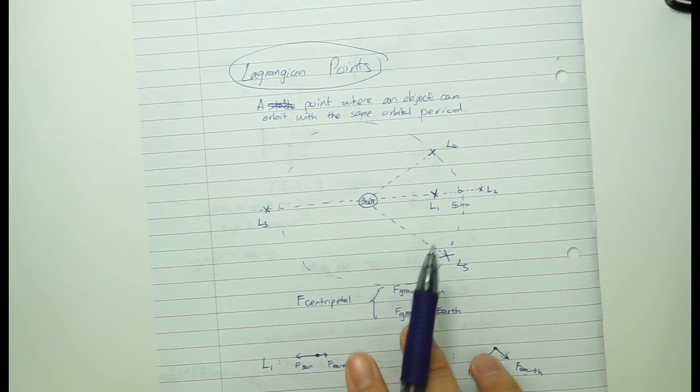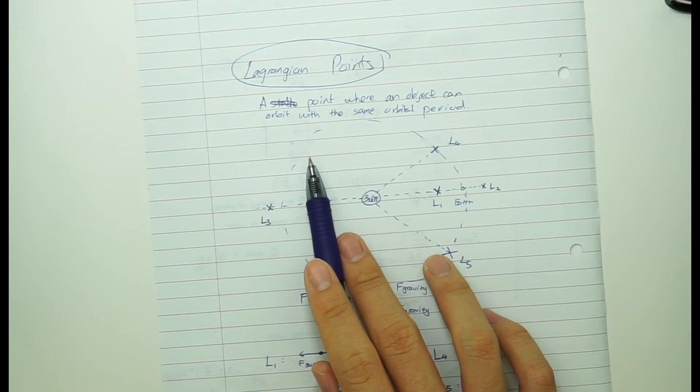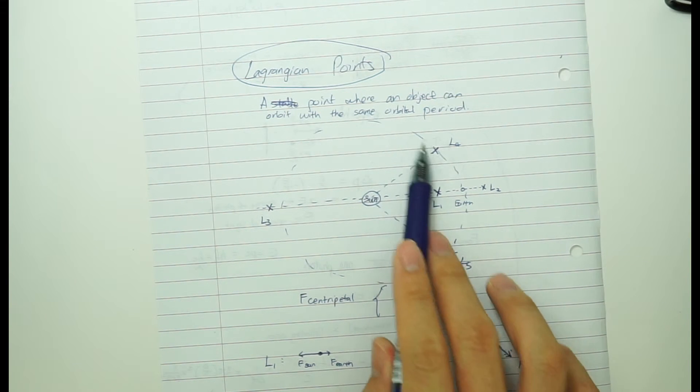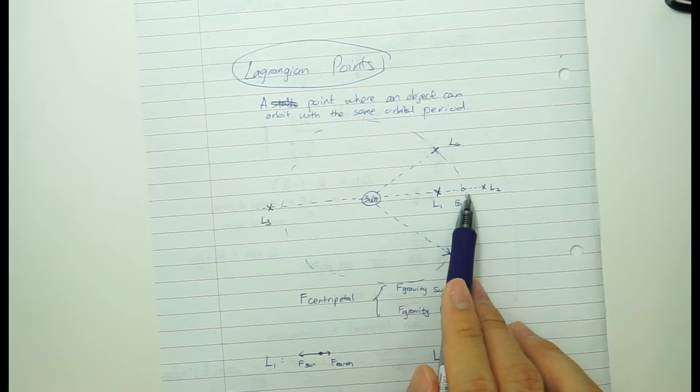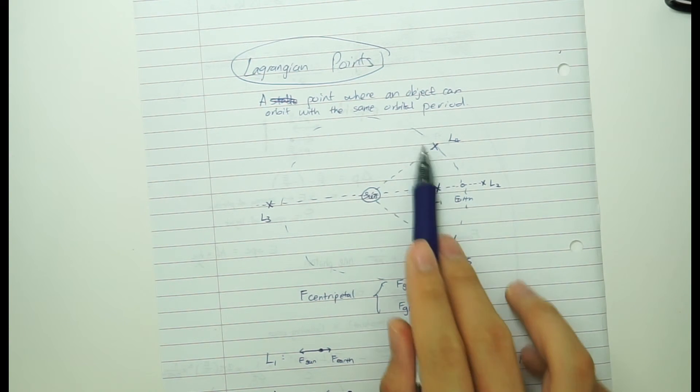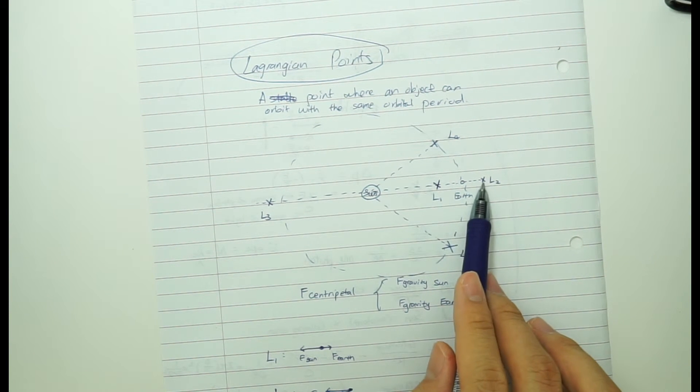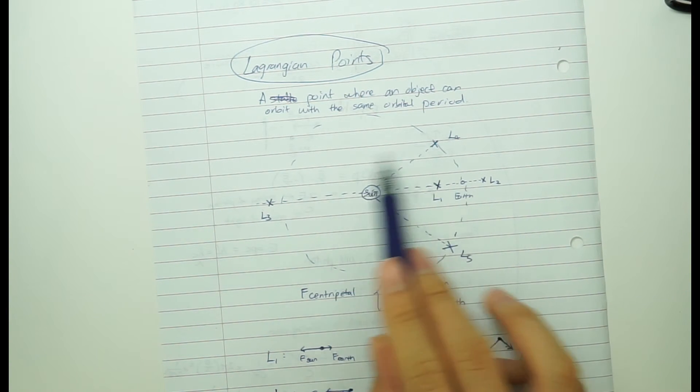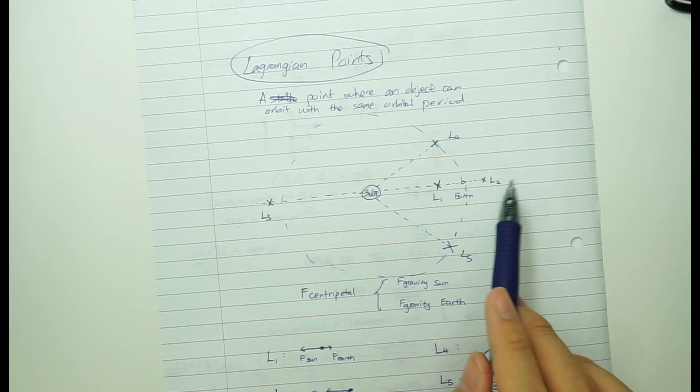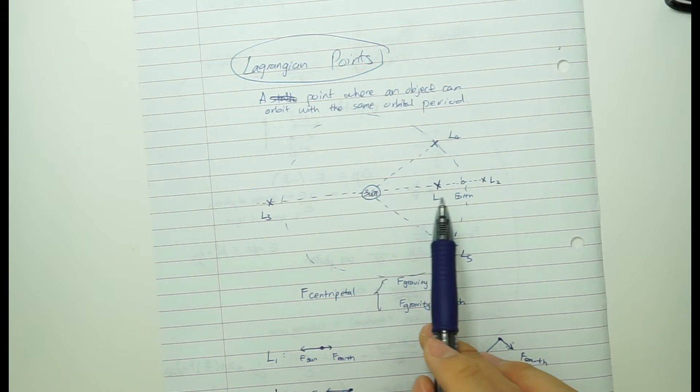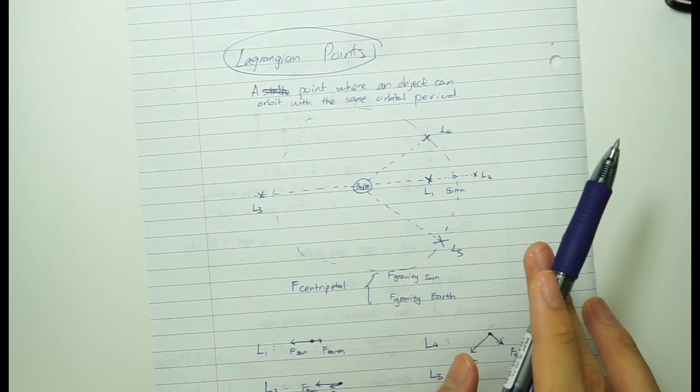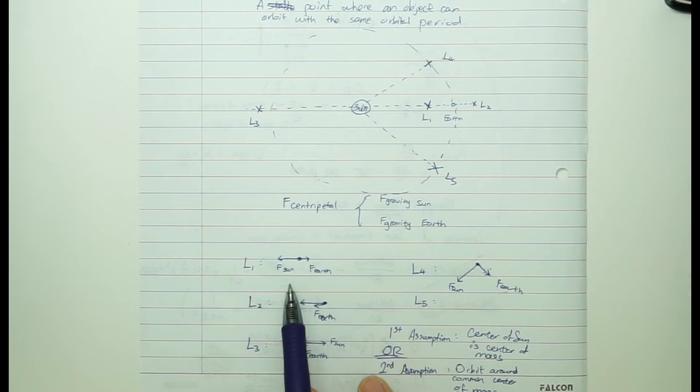And so the last point I went through for that day was that for Lagrangian points. A Lagrangian point is just a point where an object can orbit with the same orbital period as whatever your reference point is. So for example in the Sun-Earth system, at each of these points any object independent of their mass can orbit with the same orbital period as the Earth. So how is this possible? Well, you know that the circular motion is provided by the centripetal force, right?